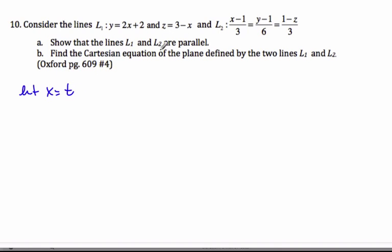And so when I do that, I know that y is going to equal 2t plus 2, and z is equal to 3 minus t. And if I then write it in this particular form, I know that x is 0, 2, 3.